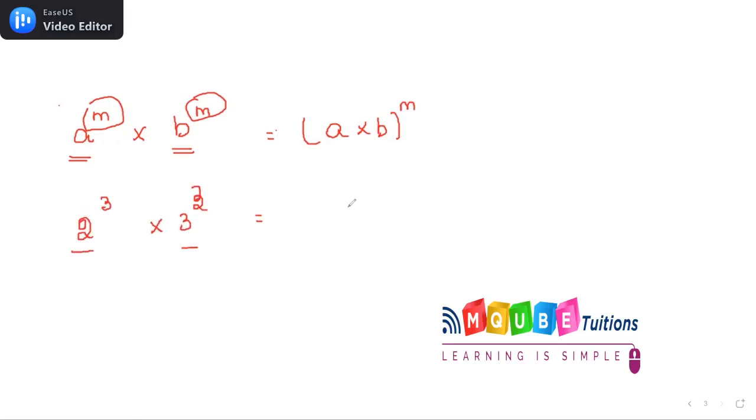So 2 multiplied by 3, the whole to the power of 3. Answer will be 6 to the power of 3. Am I right?